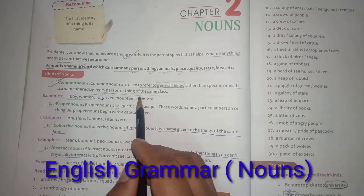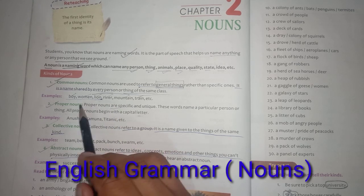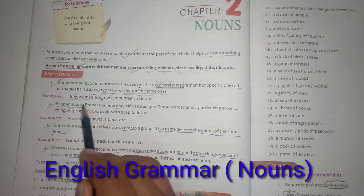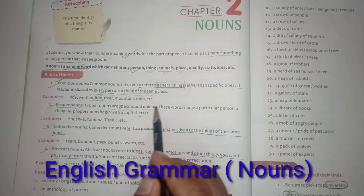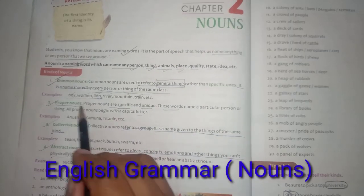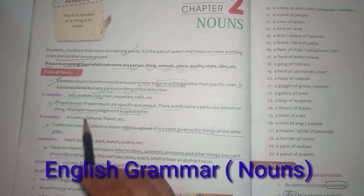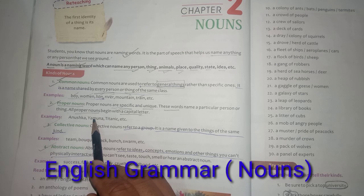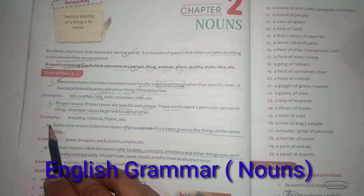The second noun is proper noun. Proper nouns are considered to be specific and unique — these words name a particular person or thing. All proper nouns begin with a capital letter. Examples are Anushka, Yamuna, Titanic. They are specific towards the object or specific towards the person, that is why it is called a proper noun.